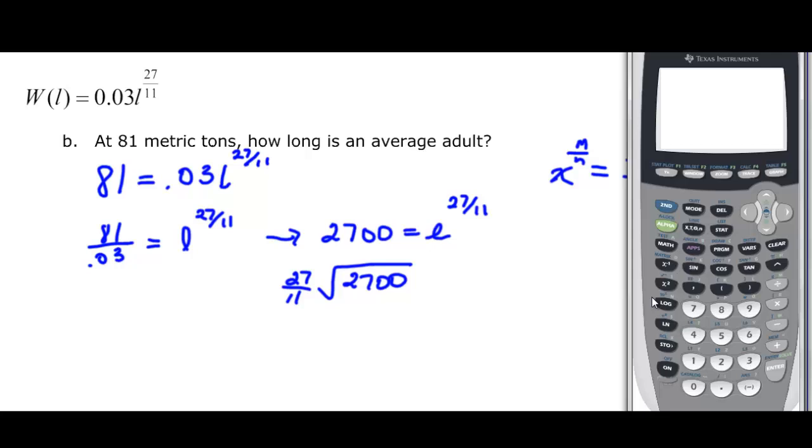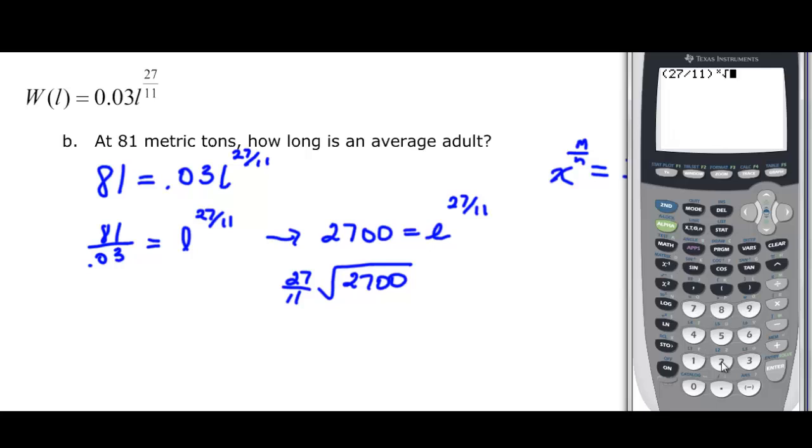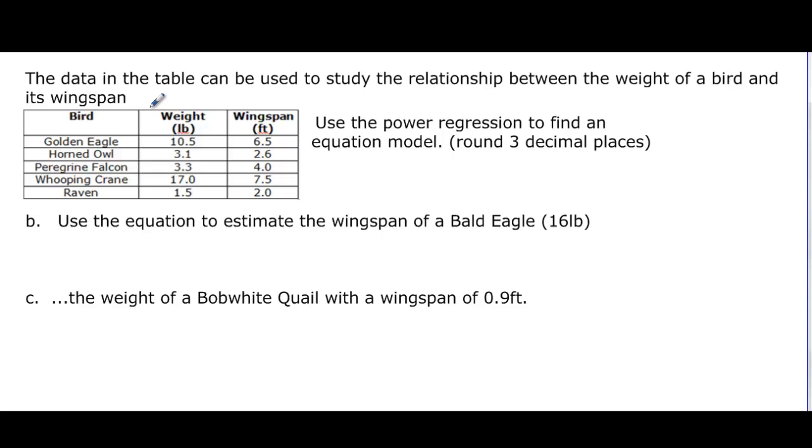We're going to have 27 divided by 11. And then we come under math, because if we're not using a square root, we come under here to find our root. And then here at 5, it says x root. So we had to put our x, our type of root, in first. Then we can use 5, and then the 2700, and then we find out it's approximately 25. So it's approximately going to be 25, and I believe that was meters.